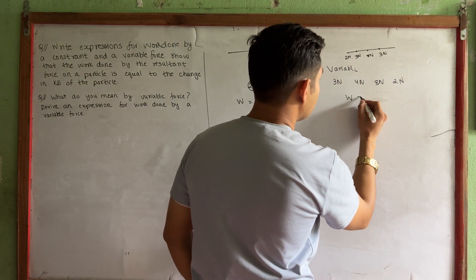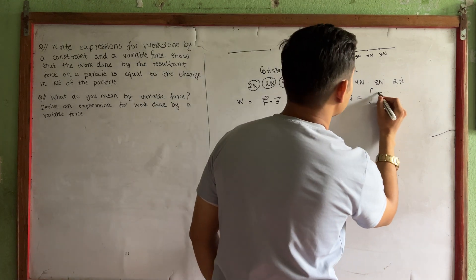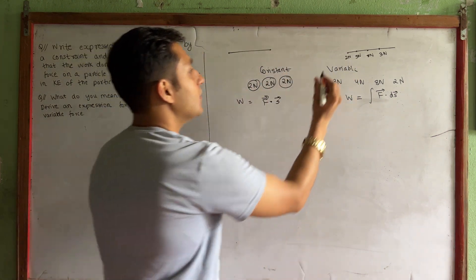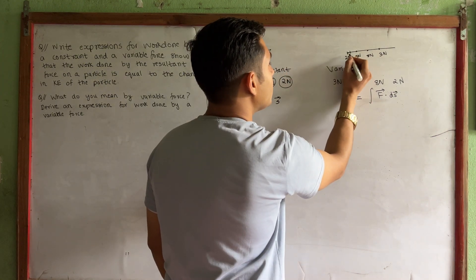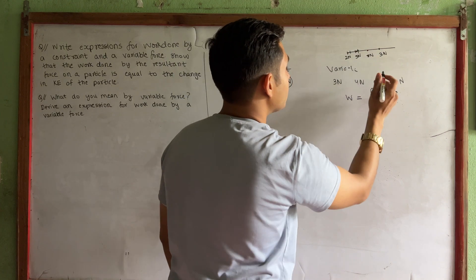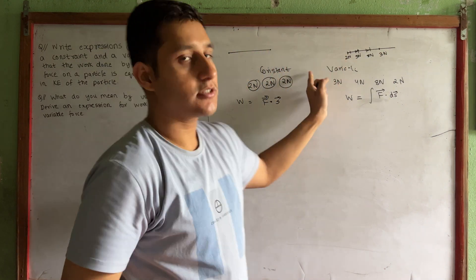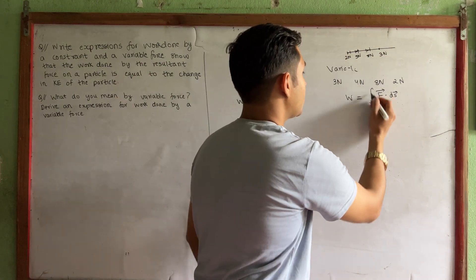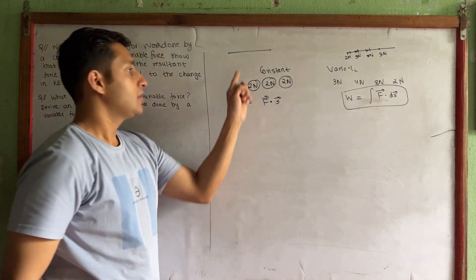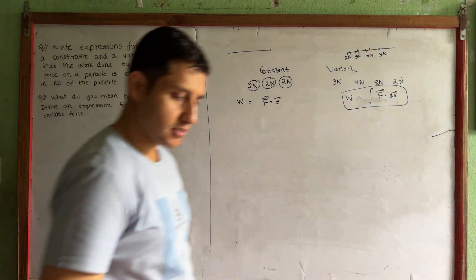So in this case we will do integration. Work done is equal to the integral of F vector dot dS vector. This means we take small displacements at each force value — 2N, then 3N, then 8N — and integrate over all of them. This gives us the formula for variable work done, and similarly for constant work done.